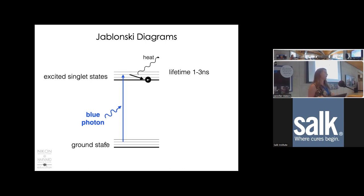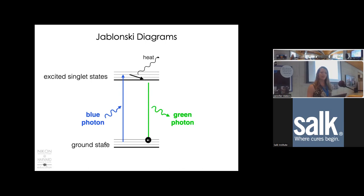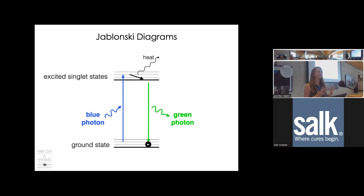Eventually the fluorophore returns to the ground state. One way it can do that is to emit all its remaining energy as a photon. The emitted photon is lower energy than the absorbed photon because some energy was lost during vibrational relaxation while in the excited state—we have less to put out than what we took in.